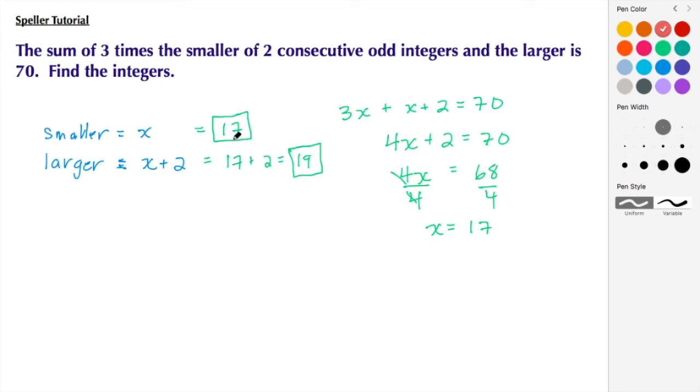this case, it's 17 times 3. So we have 3 times 17 plus the next consecutive odd integer, which is 19, and that result should be 70. Multiplying 3 times 17 gives us 51.